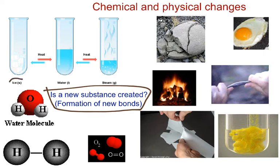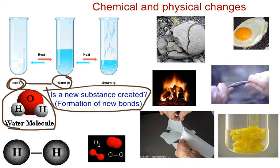If we have ice, which is solid water, and it goes to liquid water, would you say that's a chemical or physical change? We know from experience that the formula for water is H2O. When we go from solid ice to liquid water, does the H2O change in any way? Do I create or make some new substances? And the answer is no — they're all H2O in these cases.